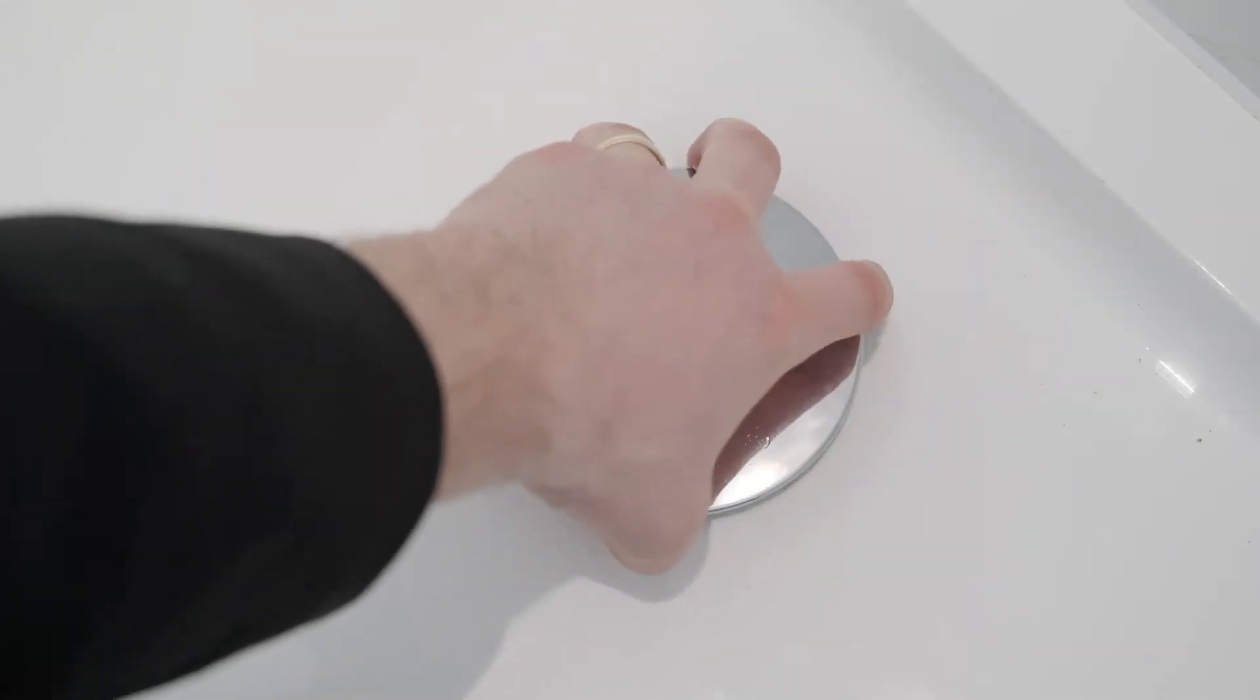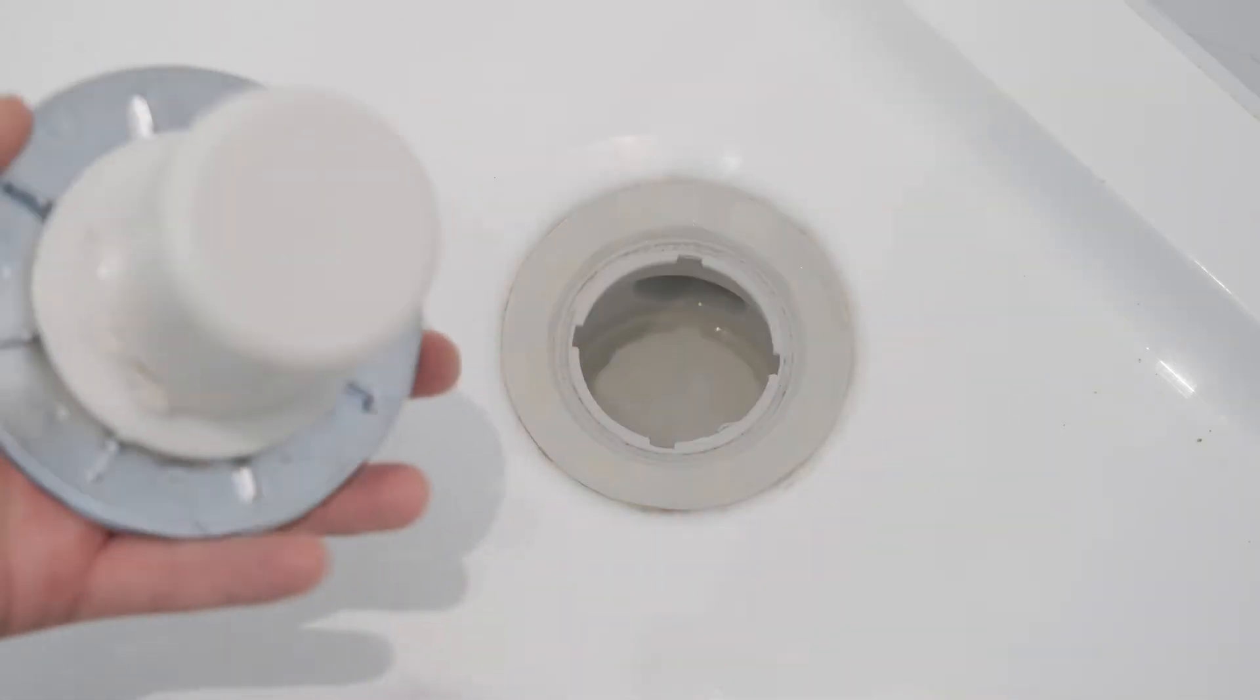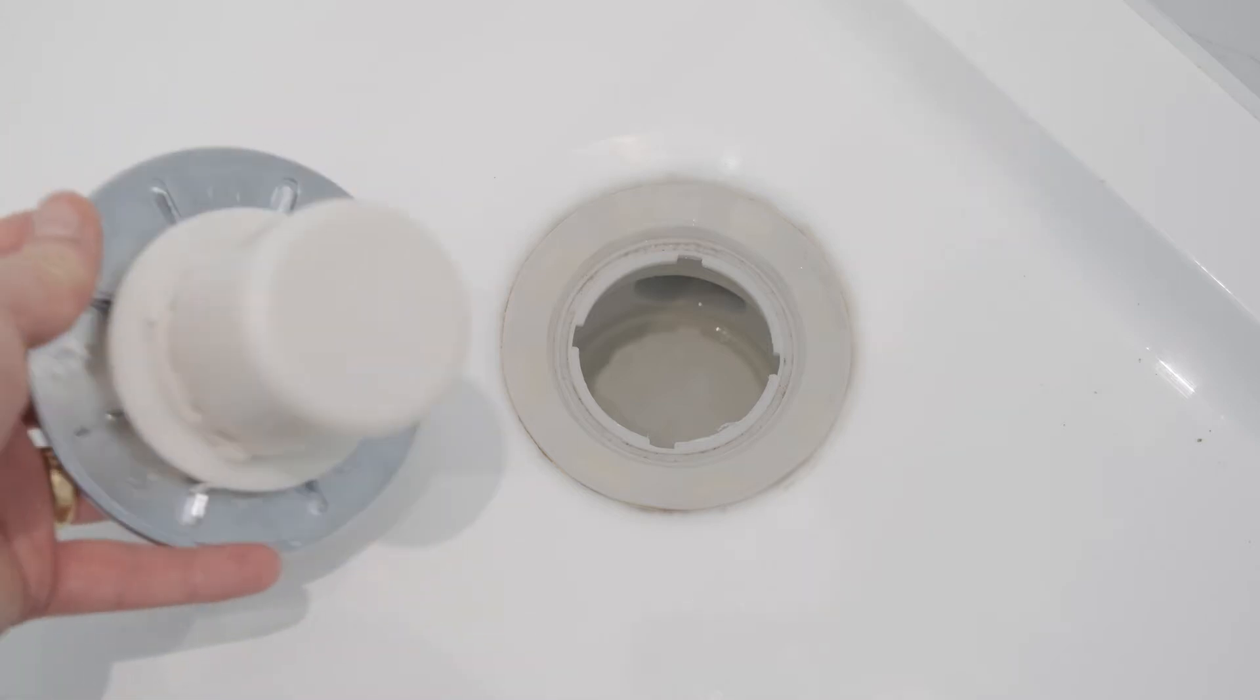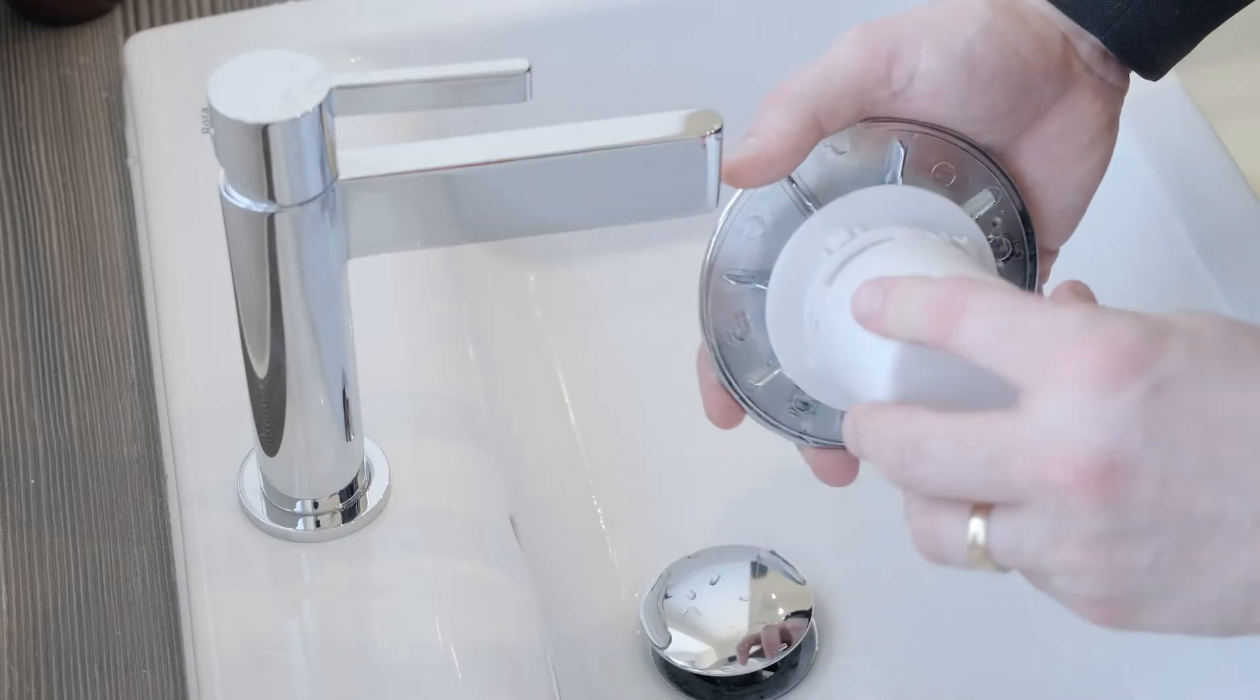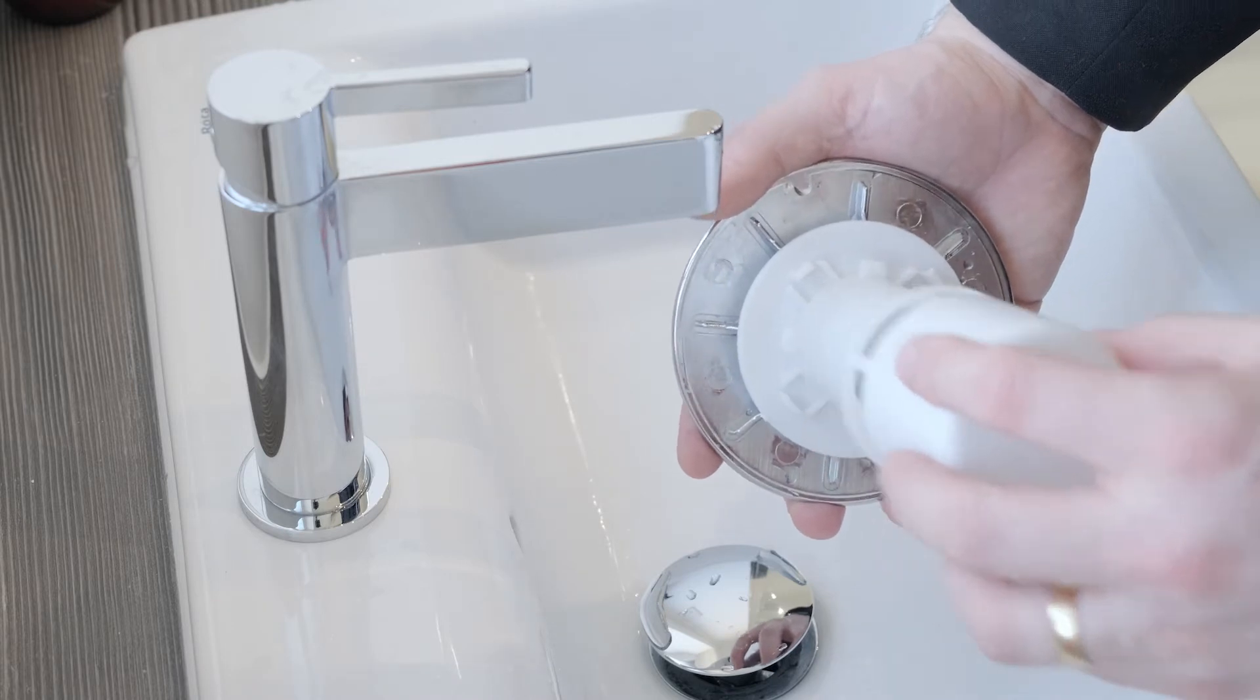To clean your shower trap, twist and lift, then pull out the cover and white container. To remove the white container, twist and pull, then clean under a tap.